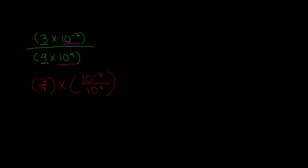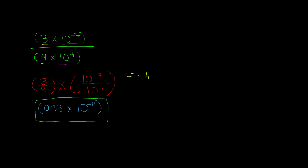Now that we've grouped these together, we can divide. 3 divided by 9 simplifies to 1/3, or 0.33. Then we have 10 to the negative 7th divided by 10 to the 4th. Remember, when you have exponents with the same base and you're dividing, you subtract the exponents: negative 7 minus 4 gives negative 11, so we get 10 to the negative 11th power. Therefore, 0.33 times 10 to the negative 11th power is the quotient of 3 times 10 to the negative 7th divided by 9 times 10 to the 4th.